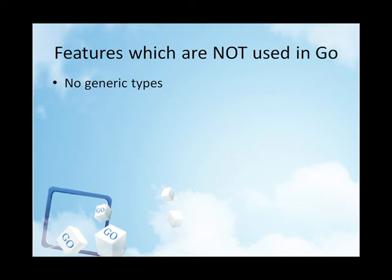Meanwhile, Go's built-in maps and slices, plus the ability to use the empty interface to construct containers, mean that in many cases it is possible to write code that does what generics would enable, if less smoothly. This remains an open issue.